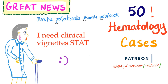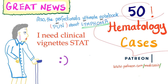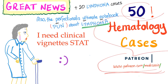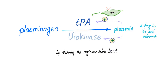I have 50 hematology cases on my Patreon page — go to patreon.com/medicosis and get all of these cases; some are really difficult and cover bleeding and coagulation disorders. Plasminogen is converted into plasmin thanks to TPA or urokinase. Plasmin will then activate TPA and urokinase, which will convert more plasminogen into plasmin — a positive feedback loop acting in its own self-interest.